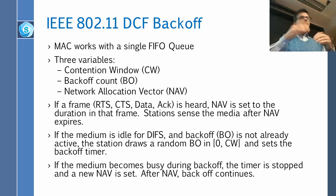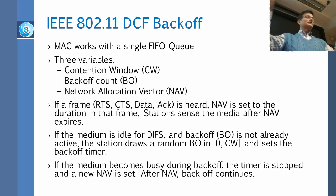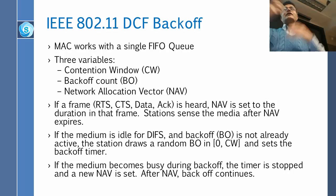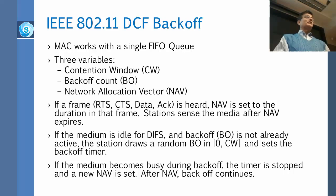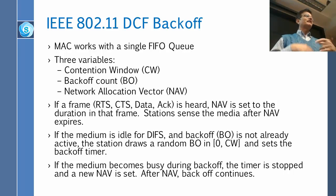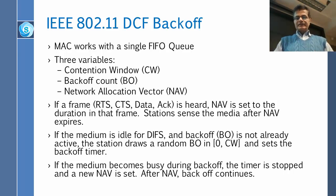The contention window and back-off count track how many times you have backed off. If you back off for the first time, you choose between zero and one. Then zero and three. Then zero and seven. The more times you try, the wider the range you must wait, because there might be many more people trying. If two people collide, they both draw a random number in the range zero to one — you draw zero, I draw one, and we're both happy. But if four people are trying, two may draw the same number and collide again, so next time they all draw between zero and three. This is exponential back-off — every time you try, you double the range — just like in Ethernet.